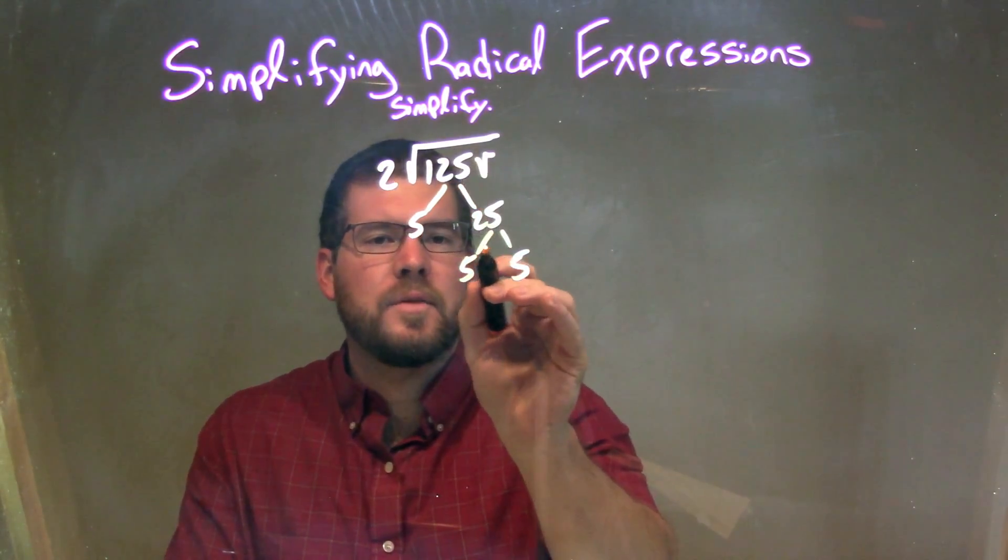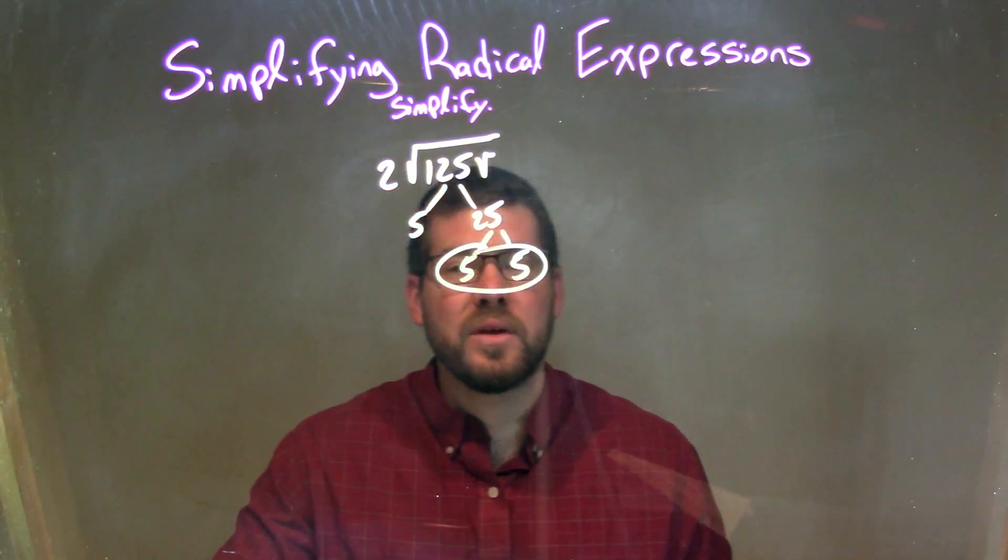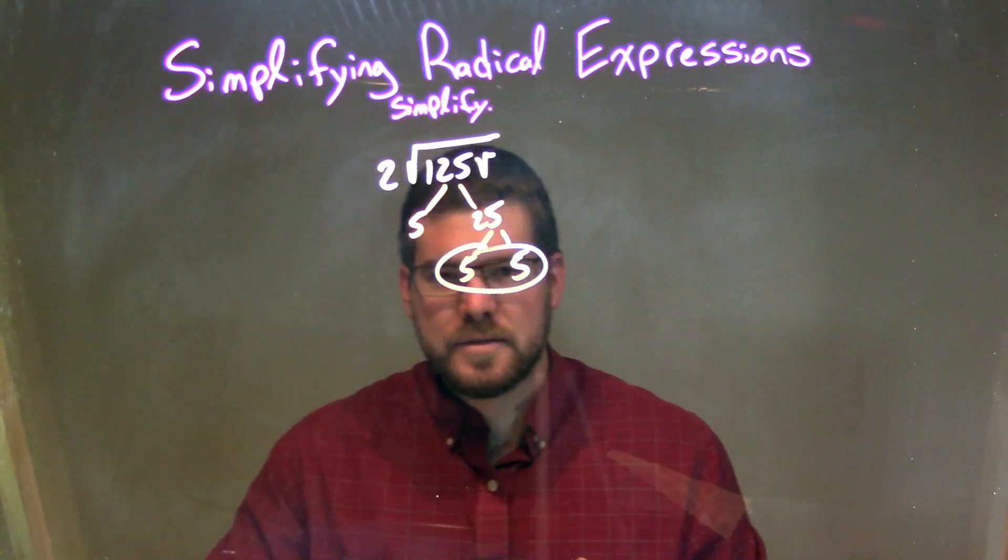So now let's go circle up pairs. I see one pair of 5s right there, and that's really it. So now when I rewrite this...